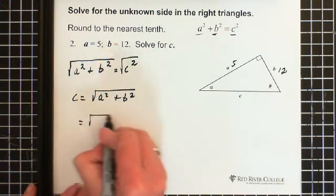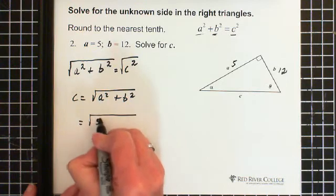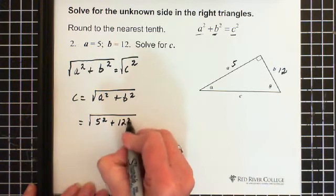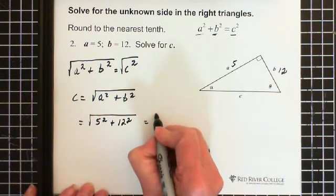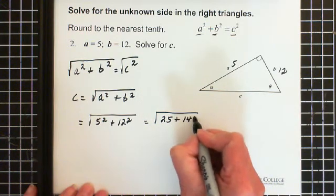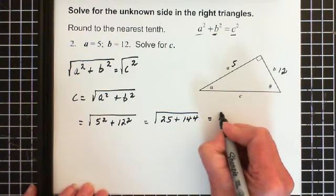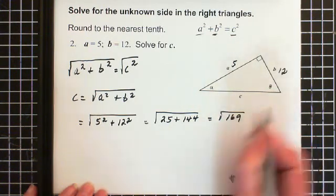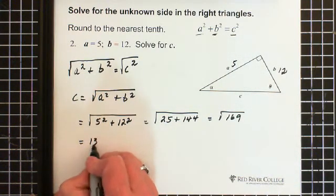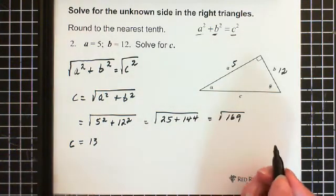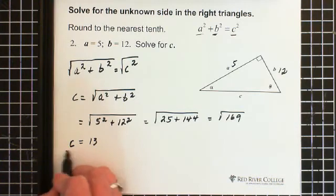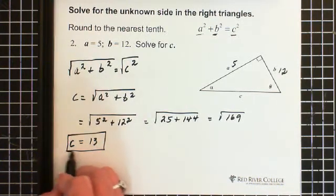So we have the square root of A is 5, so we have 5 squared plus B is 12, so we have 12 squared. And we end up with the square root of 25 plus 144, which equals the square root of 169. And the square root of 169 is 13. So C equals 13. We're asked to round to the nearest tenth, but really we can't. Our answer is 13, and this happens to be a particular triangle.